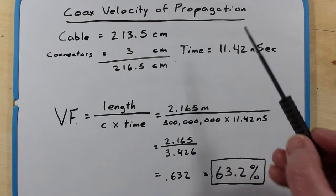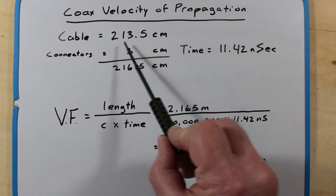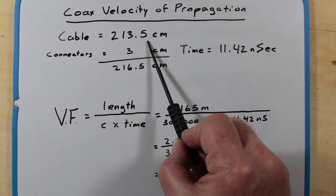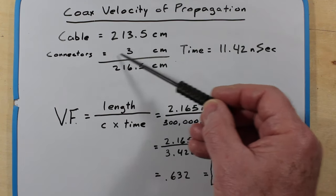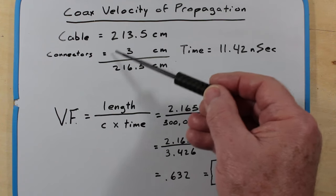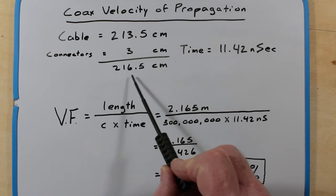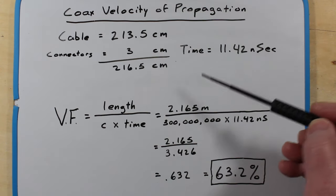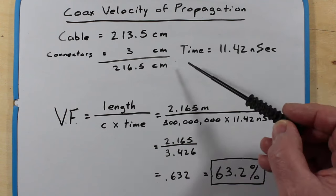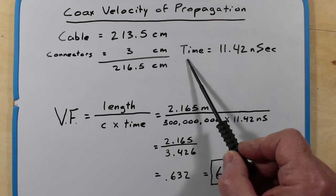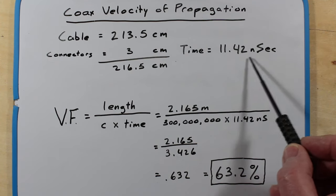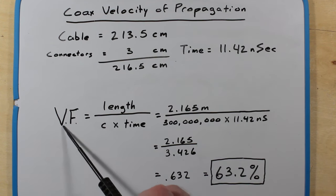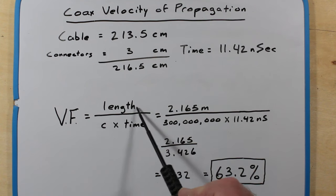So here's our calculation using the results that we've come up with. Our cable length as measured is 213.5 centimeters, which is the seven foot cable. We go through a couple of T's, so I decided to add a tiny bit for that. So our approximate length is 216.5 centimeters for our between our two inputs on the scope. The time as measured on the scope is 11.42 nanoseconds. So we're going to plug those into our simple formula here for the velocity factor.